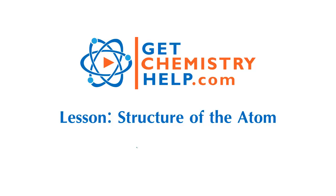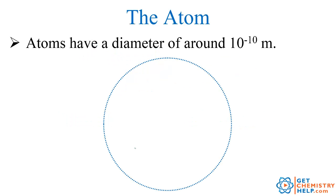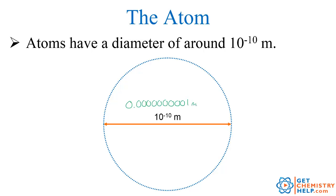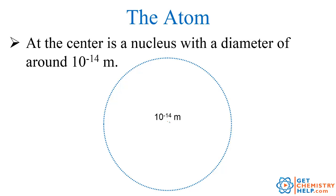The basic atomic structure that scientists have come up with is something like this. The atom itself is very tiny — it only has a diameter of around 10 to the negative 10th meters. That's like saying 0.00000001 meters, or about a billionth of a meter across. Within this already extremely small atom there is another part called the nucleus, and the nucleus has a diameter of only 10 to the negative 14th meters.